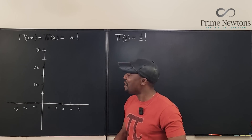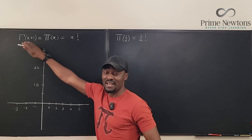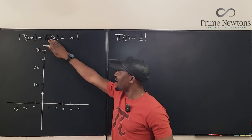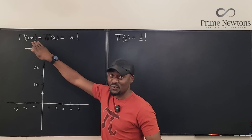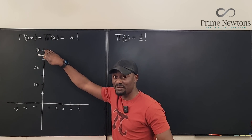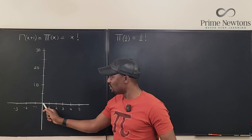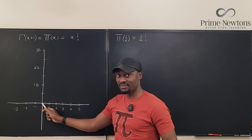In the first place, remember: as soon as we were able to get our gamma function, and we also got the pi function — which is the shifted version of the gamma function — we were straightaway able to compute the factorial of zero.